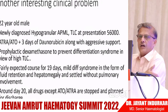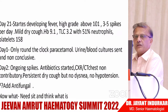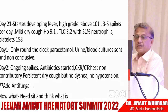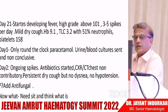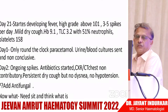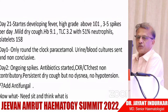Around day 20 all drugs except ATO were stopped and discharge was planned. Then day 21: high-grade fever, three to five spikes per day, mild dry cough, CBC fairly normal. Round-the-clock paracetamol given, urine and blood cultures sent — reports were not conclusive. Day two: ongoing spikes, antibiotics started.